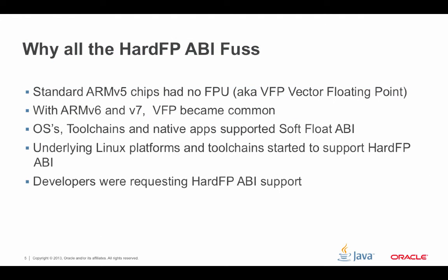Why all this hard FP ABI fuss? If you go back in history, you find that on embedded systems, a lot of them had no floating point units. When looking at the standard ARM v5 chips, there really didn't exist a floating point unit — there wasn't the otherwise known as the vector floating point. When it comes to ARM v6 and v7, that's where VFP started to come in and floating point units were added to some of the hardware.